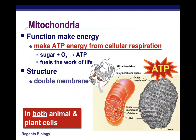Mitochondria are found in most eukaryotic cells and their function is to make ATP energy through cellular respiration, which we'll discuss in a few units. They have double membranes — from endosymbiosis — and the inner membrane is folded to increase surface area for more efficient energy production. It is a common misconception that animal cells only have mitochondria and plant cells only have chloroplasts. In fact, plant cells have both.